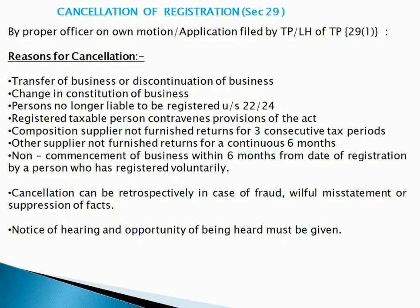Further reasons for cancellation: a registered taxable person contravenes provisions of the Act; a composition supplier has not furnished returns for three consecutive tax periods; other than composition suppliers, if returns are not furnished for six consecutive months.